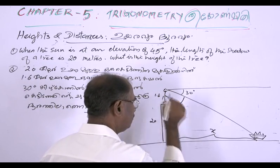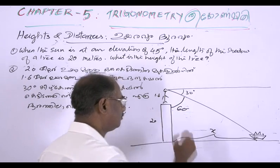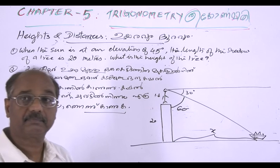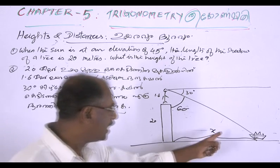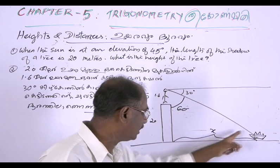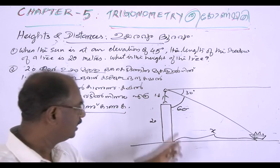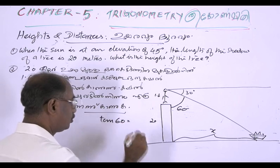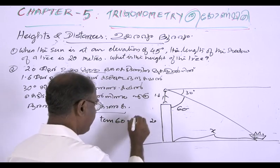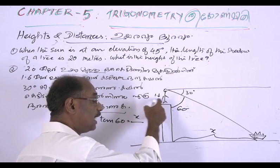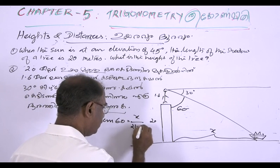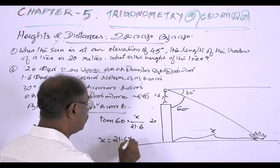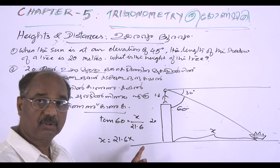This triangle — this angle is 60 degrees. This triangle is 30 degrees. tan 60 is equal to XZ divided by the distance. tan 60 equals root 3.